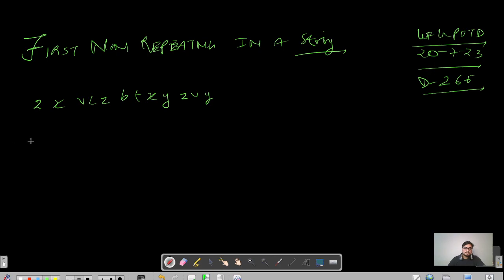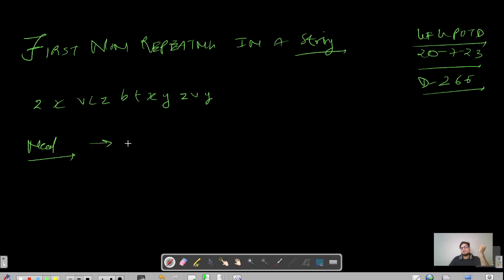So what do we need? The character should not be repeated. That means we have to store the frequency. What is the best data structure used to store the frequency? Definitely HashMap — where we keep key-value pairs. Here the key type is Character and the value type is Integer.